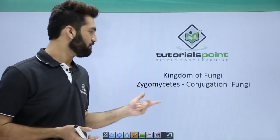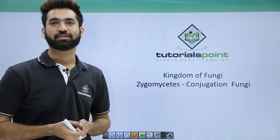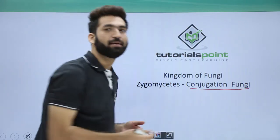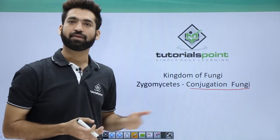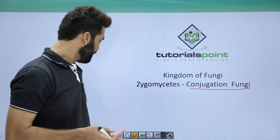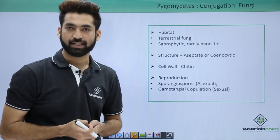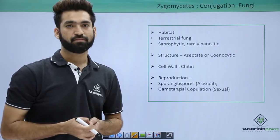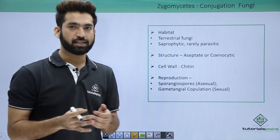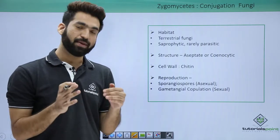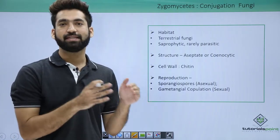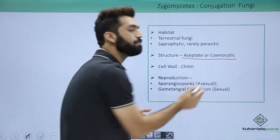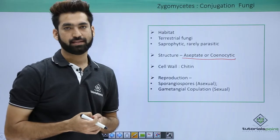In this session we'll be detailing another class of fungus called zygomycetes. Zygomycetes are called conjugation fungi because of their method of sexual reproduction. When we talked about phycomycetes, I told you that phycomycetes have aseptic mycelia — aseptic means coenocytic or multinucleated. Phycomycetes is divided into oomycetes and zygomycetes, so zygomycetes members will also have aseptic or coenocytic mycelia.